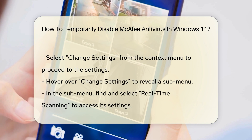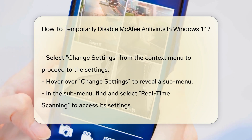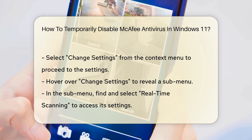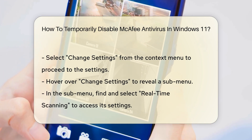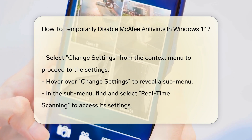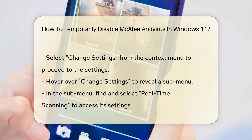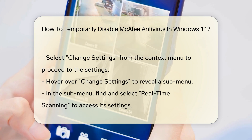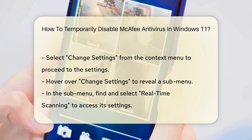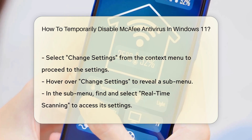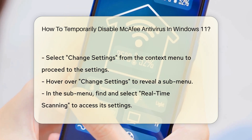Next, look for the option labeled Change Settings. Hover over this option to reveal a submenu. In this submenu, find and select Real-Time Scanning. This will take you to the settings for the real-time protection feature of McAfee.